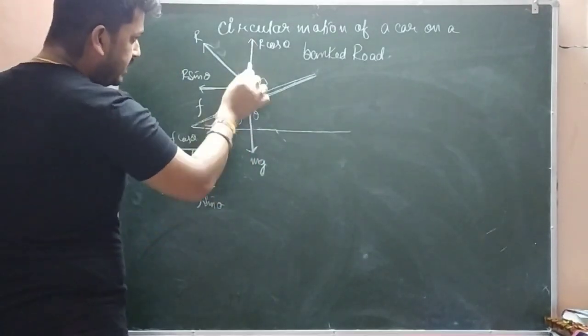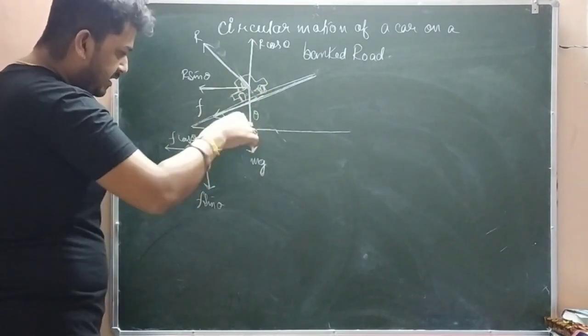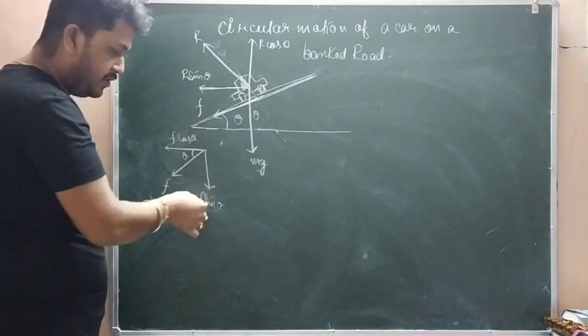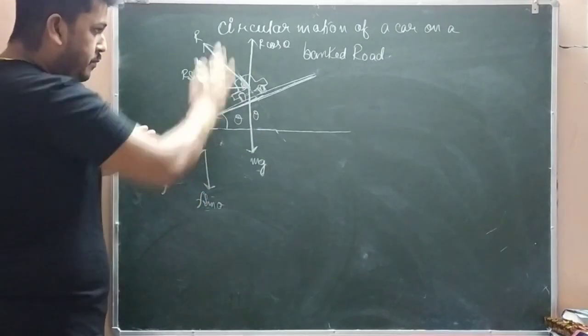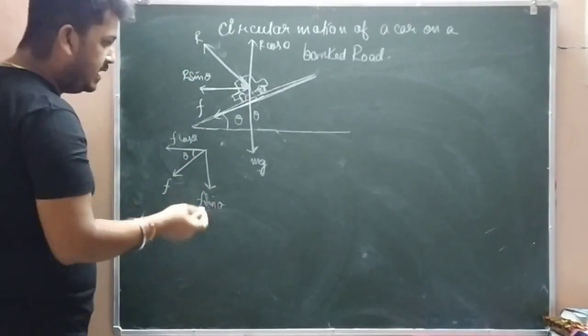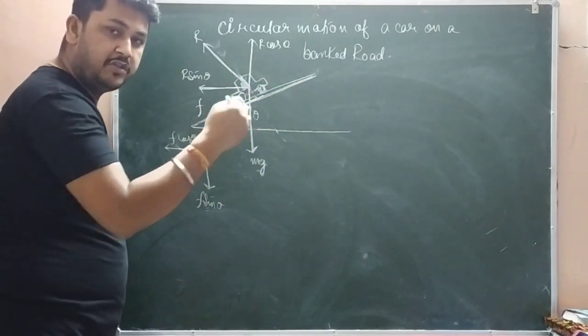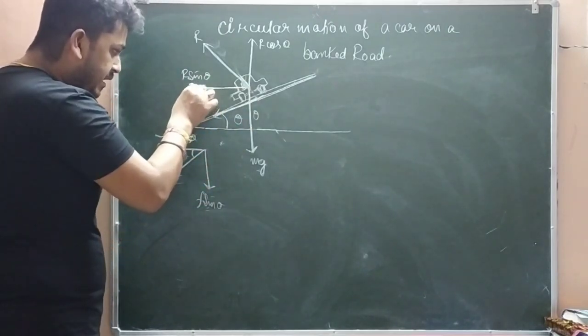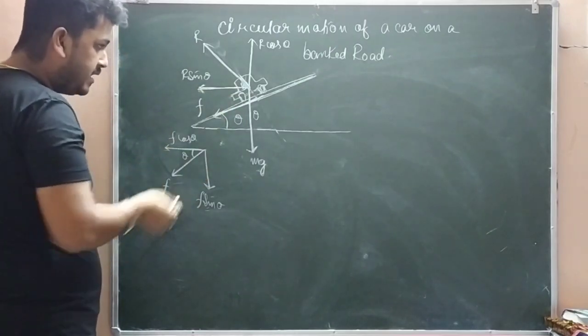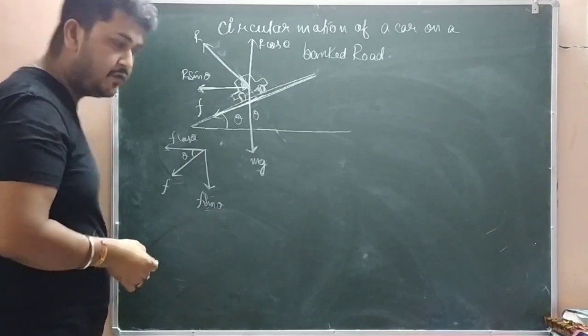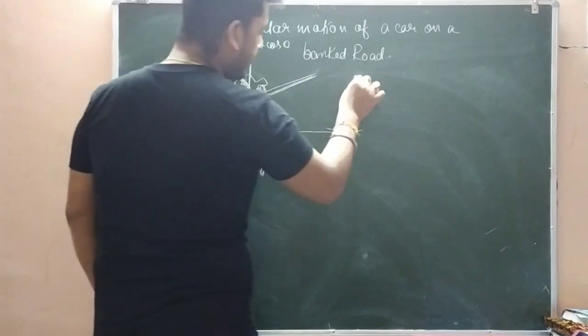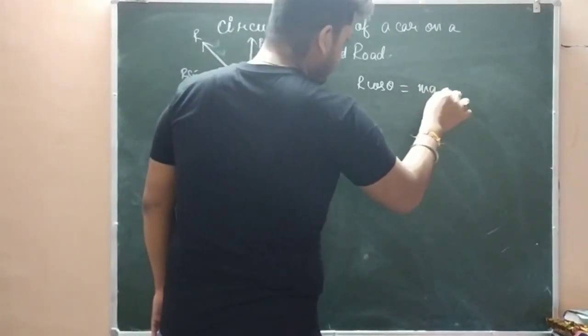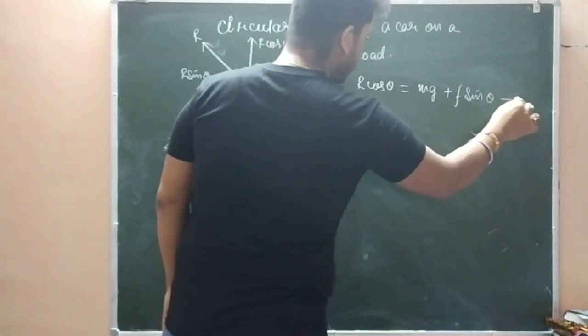Now here, R cos theta balances mg and F sin theta. That means R cos theta is equal to mg plus F sin theta. This is equal and opposite. So the equation from the figure is R cos theta equals mg plus F sin theta.